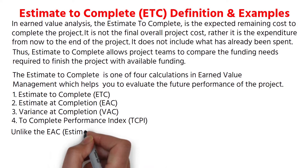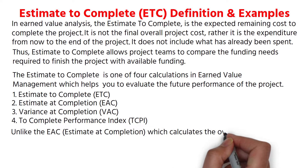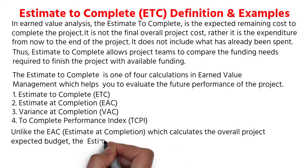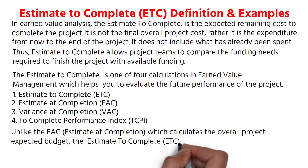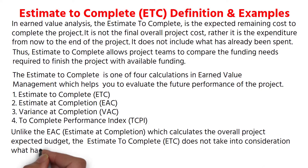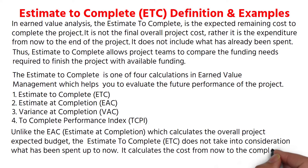Unlike the Estimate at Completion, which calculates the overall project expected budget, the estimate to complete does not take into consideration what has been spent up to now. It calculates the cost from now to the completion of the project.